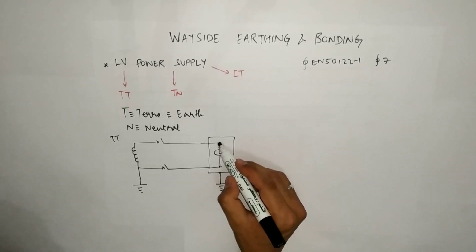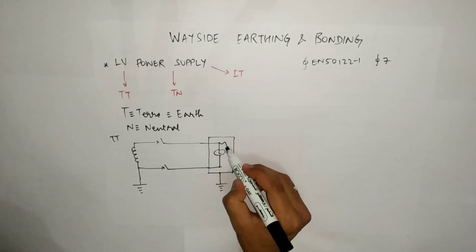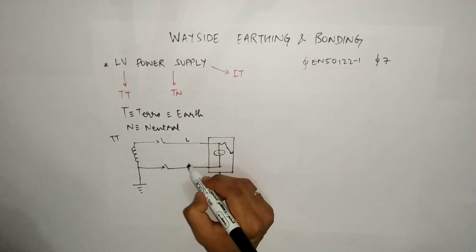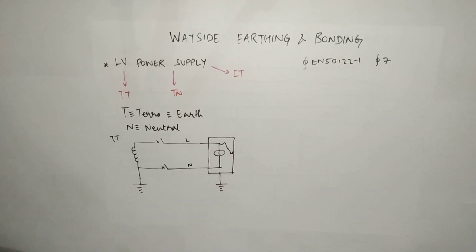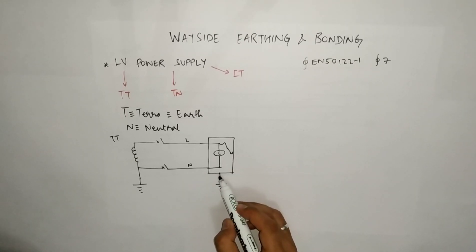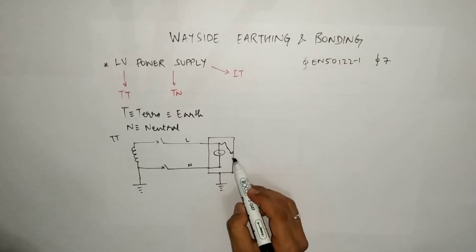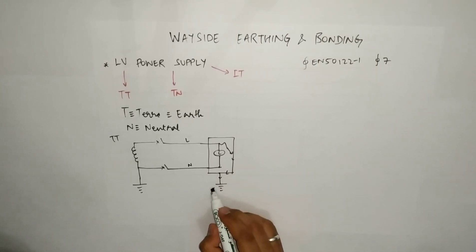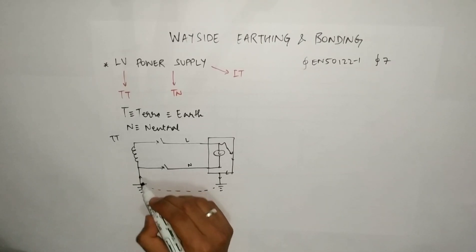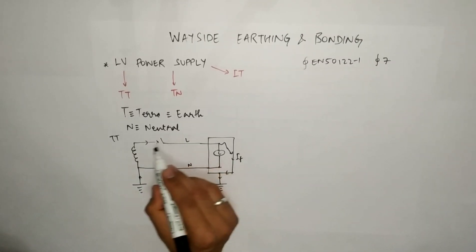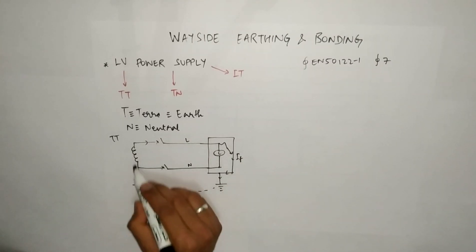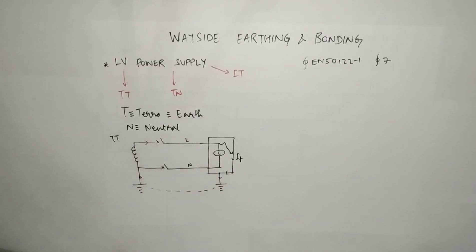In case there is a fault — suppose the line conductor is touching the enclosure. Since the equipment is connected to earth, the current will start flowing and go back to its source, completing the path. The fault current will flow through the body and then through the earth, leading to the tripping of the circuit breaker.